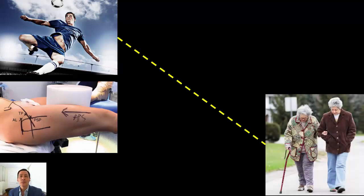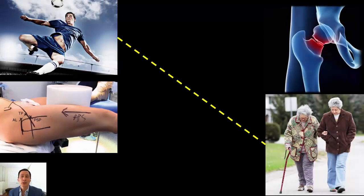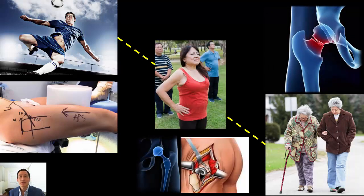At the other end of the patient spectrum, we have the frail elderly patient with a broken hip, and somewhere in the middle, the patient for an elective total hip replacement. Even among these patients, we see significant variability between individuals in the degree of pain they experience and the amount of opioid analgesia that they require.